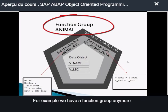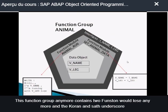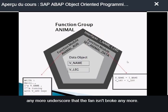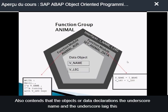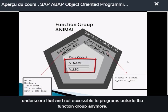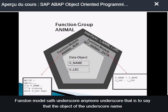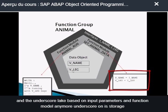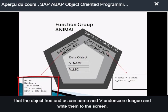For example, we have a function group called 'animal'. This function group contains two function modules: animal_run and set_animal_data. The function group animal also contains two data objects: v_name and v_leg. These data objects are visible only to function modules animal_run and set_animal_data, and not accessible to programs outside the function group animal. Function module set_animal_data sets data objects v_name and v_leg based on input parameters, and function module animal_run reads v_name and v_leg and writes them to the screen.